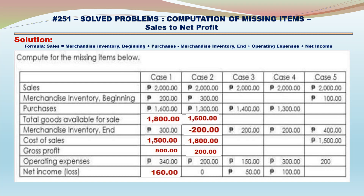Case 3: Gross Profit equals Operating Expenses plus Net Income — 150 plus 50 equals 200. Cost of Sales equals 1,800 — Sales 2,000 minus Gross Profit 200. Total Goods Available for Sale equals 2,000 — Cost of Sales 1,800 plus Ending Inventory 200. Merchandise Inventory Beginning equals 600 — Total Goods Available for Sale 2,000 minus Purchases 1,400.